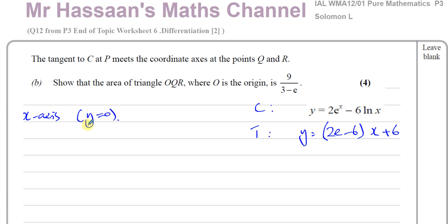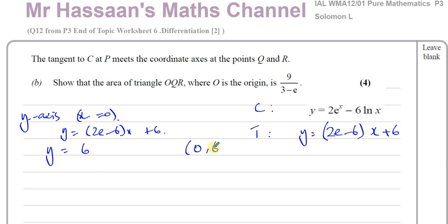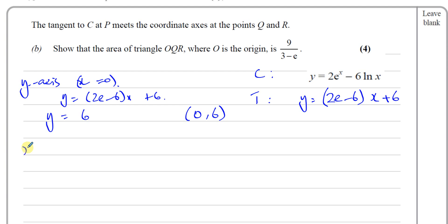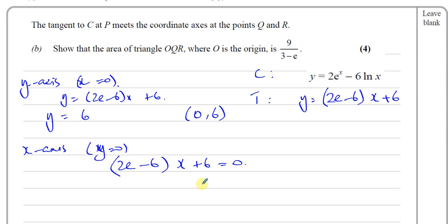It meets the x-axis when y equals 0, and it meets the y-axis when x equals 0. Starting with the y-axis: when x equals 0, y equals 6. So the point is (0, 6) — that's where it hits the y-axis. For the x-axis, when y equals 0: (2e minus 6)x plus 6 equals 0, so (2e minus 6)x equals negative 6, giving x equals negative 6 over (2e minus 6).